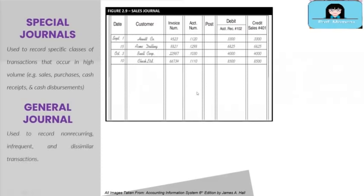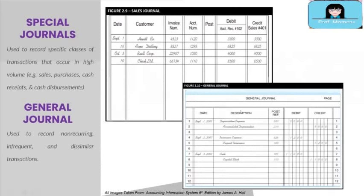Next we have the general journal. The general journal is used to record non-recurring, infrequent, and dissimilar transactions. Examples are depreciation, write-off of accounts receivable, and accruals. The diagram on the screen is an example of a general journal.